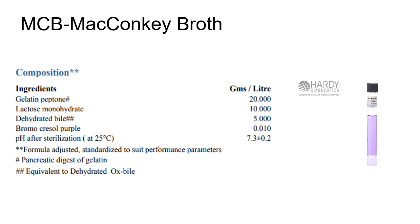Gelatin peptone provides essential growth nutrients. Lactose is the fermentable carbohydrate. Dehydrated bile inhibits gram-positive organisms. Bromocresol purple turns yellow under acidic conditions, allowing detection of pH change — the color change is observed when pH falls below 6.8. Lactose-fermenting organisms turn the medium yellow due to high acidity. Lactose non-fermenting organisms such as Salmonella and Shigella do not alter the appearance of the medium. Incubation is at 45°C for 24 to 48 hours, after which you subculture onto MacConkey agar to verify your culture.